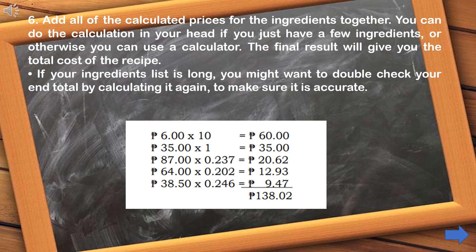Step number 6: Add all of the calculated prices for the ingredients together. You can do the calculation in your head if you just have a few ingredients, or otherwise you can use a calculator.